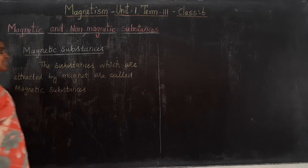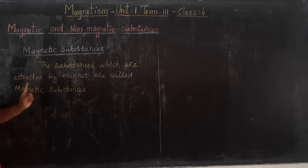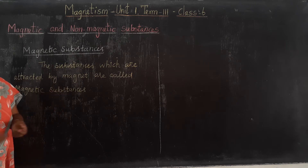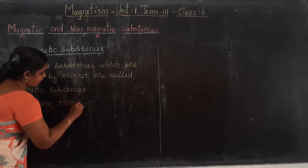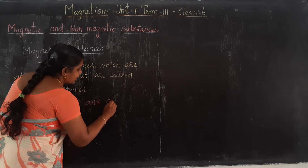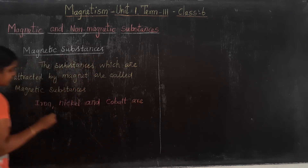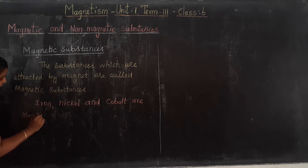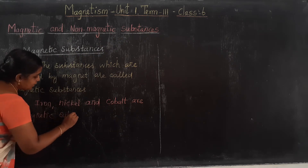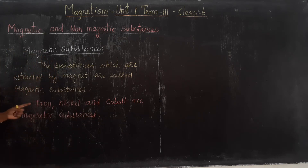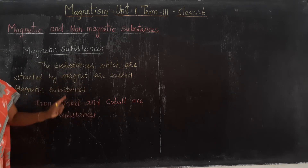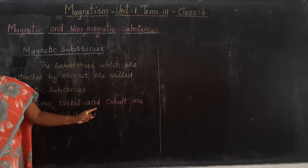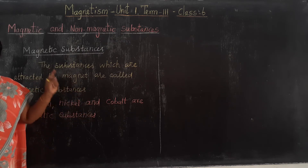So students, the substances which are attracted by magnets are called magnetic substances. Iron, nickel, and cobalt are magnetic substances — these are the elements which are attracted by magnets, so they are called magnetic substances.